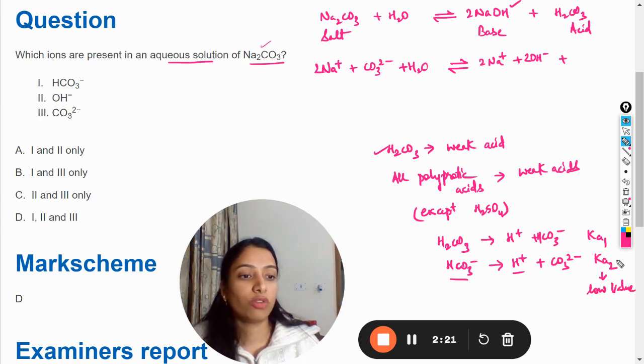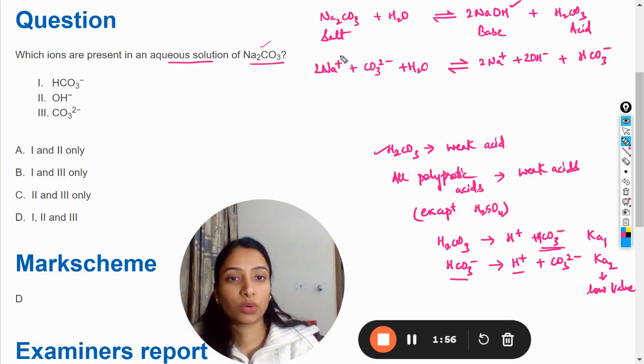So that's why these polyprotic acids are weak acids. This H2CO3 is a weak acid, so it will be in the form of HCO3⁻ because it has high Ka value, so it will dissociate into its ions and produce HCO3⁻. So here we can cancel out these